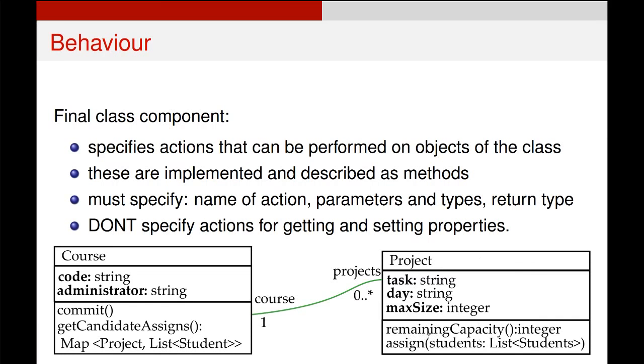If we look at our project object we can see a couple of other behaviors. We can run this method called remainingCapacity that will return an integer showing how many spaces are left in this project. We can also assign students to that project by passing them into this method as a list of student objects.